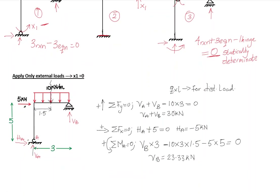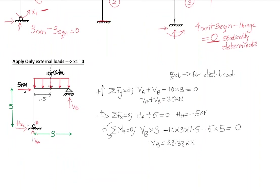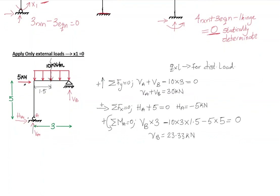Please try solving along with me — take a piece of paper and solve together. After finding VB and HA, let's find VA: from the equation VA = 30 − VB, we get VA = 6.67 kN. We have successfully found all the reactions.